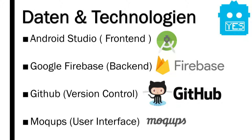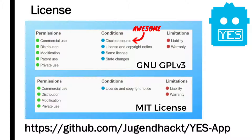For the tools, we use Android Studio for frontend and Google Firebase for backend. We use GitHub for version control and mockups for user interface. We chose the GNU General Public License version 3 instead of MIT license because we want to keep our sources completely open even if they are used for commercial purposes.